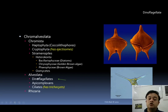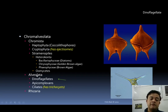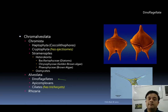Dinoflagellates belong to Alveolata — the name referring to gas-filled vesicles underneath the plasma membrane. Other members of Alveolata include apicomplexans and ciliates. Ciliates like Paramecium have trichocysts, while apicomplexans are notorious human pathogens, such as Plasmodium vivax and Toxoplasma gondii.